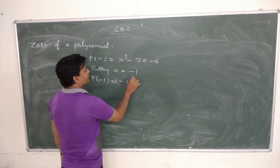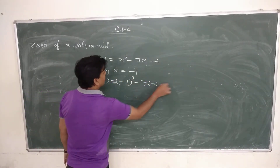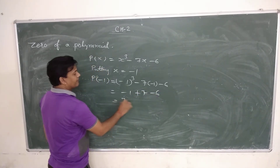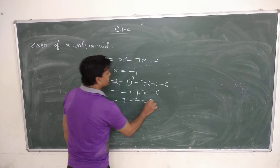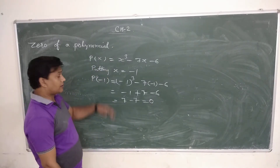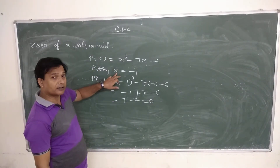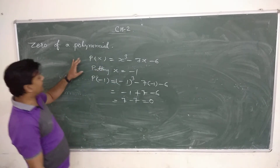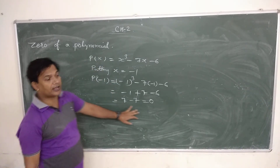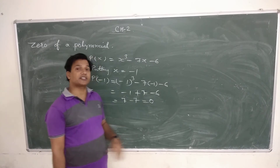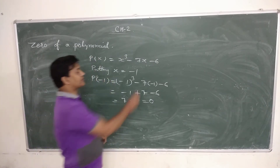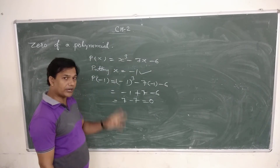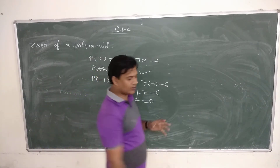So what we get? Minus 1 raised to 3, minus 7 into minus 1, minus 6 — that gives minus 1 plus 7 minus 6, which is 7 minus 7, equals zero. When we put x = minus 1 in this polynomial, we get p(x) = 0. That's why x equals to minus 1 is a zero of this polynomial.